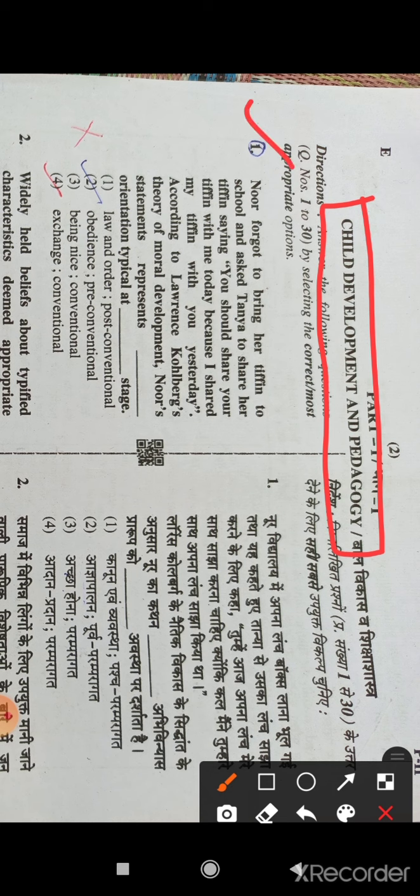So first question is, Noor forgot to bring her tiffin to school and asked Tanya to share her tiffin saying, you should share your tiffin with me today because I shared my tiffin with you yesterday. According to Lawrence Kohlberg's theory of moral development, Noor's statement represents dash orientation typical at dash stage. The right answer will be option number 4, exchange and conventional.